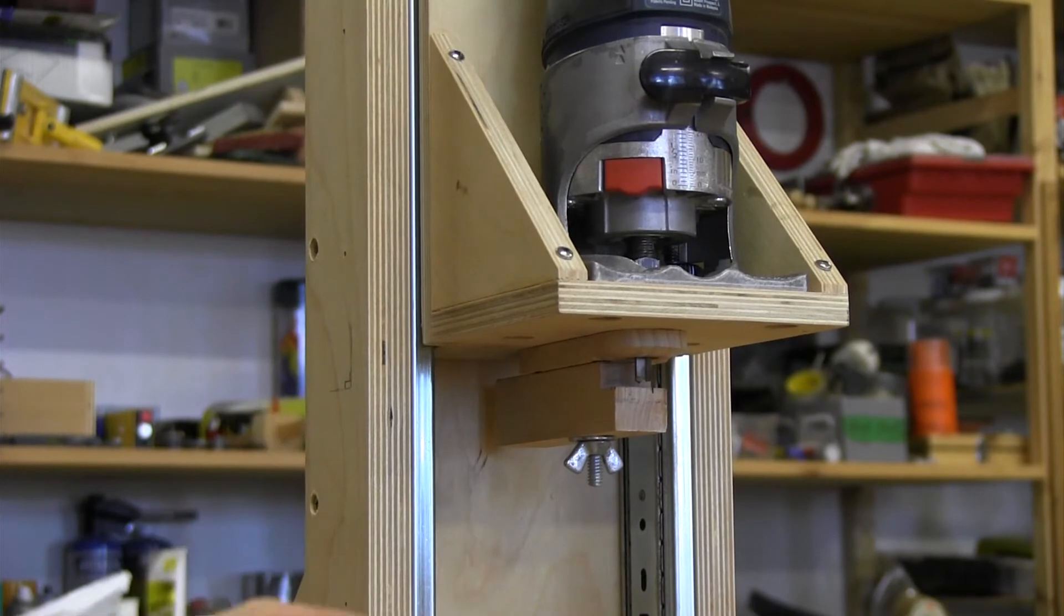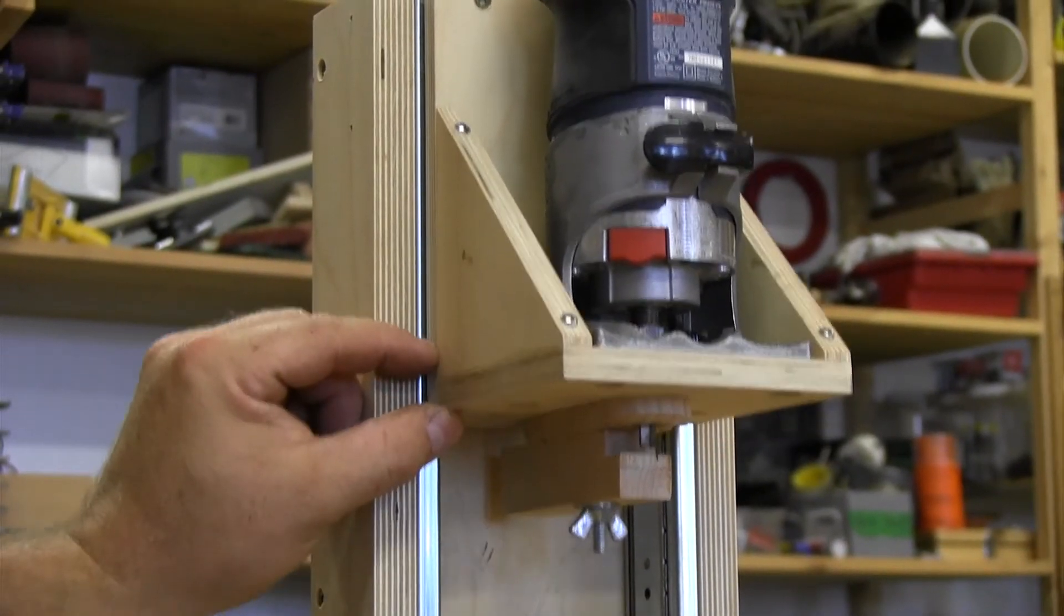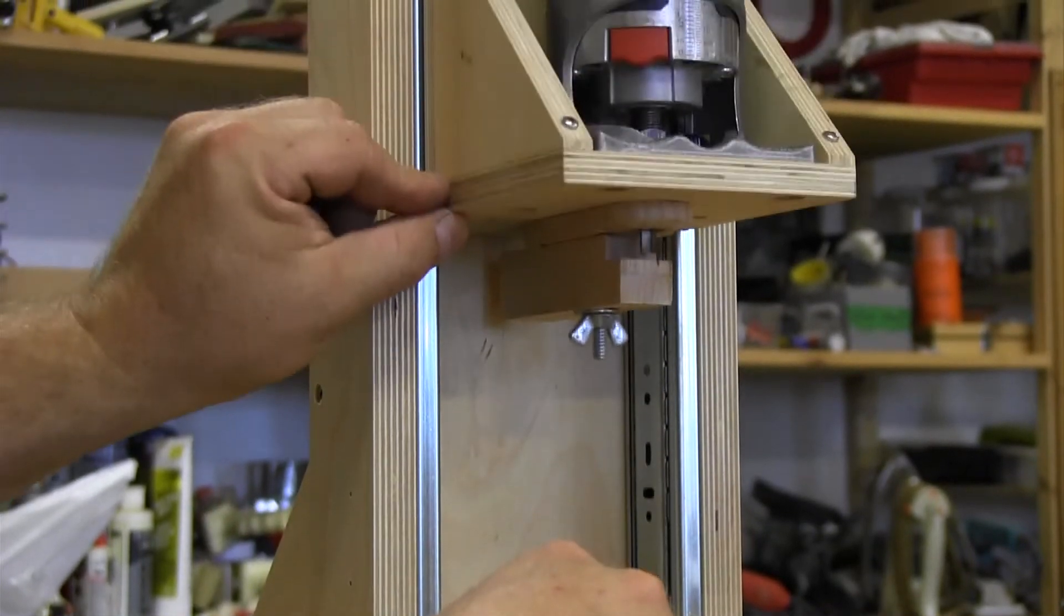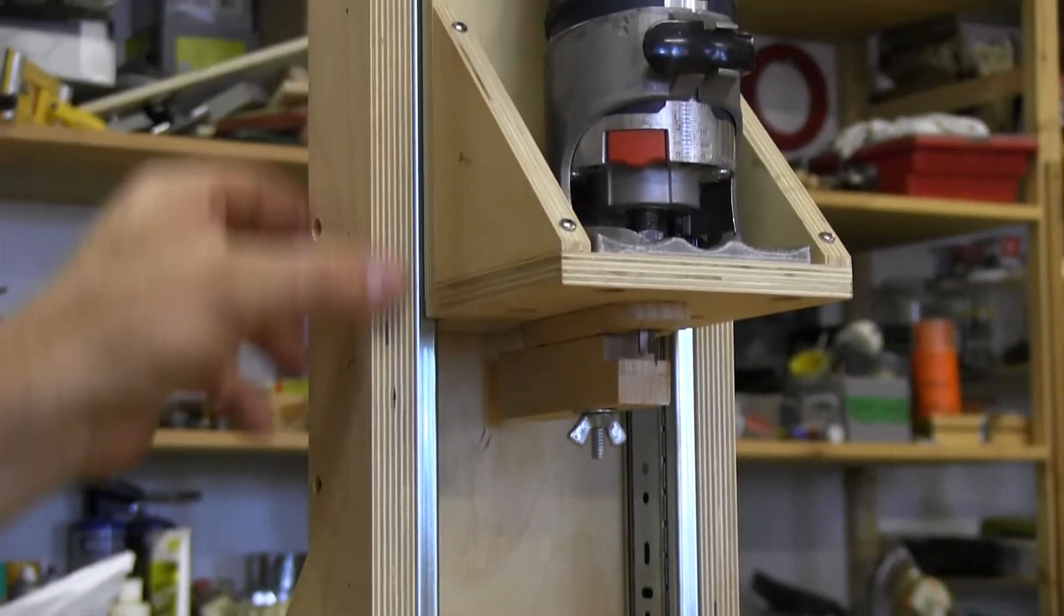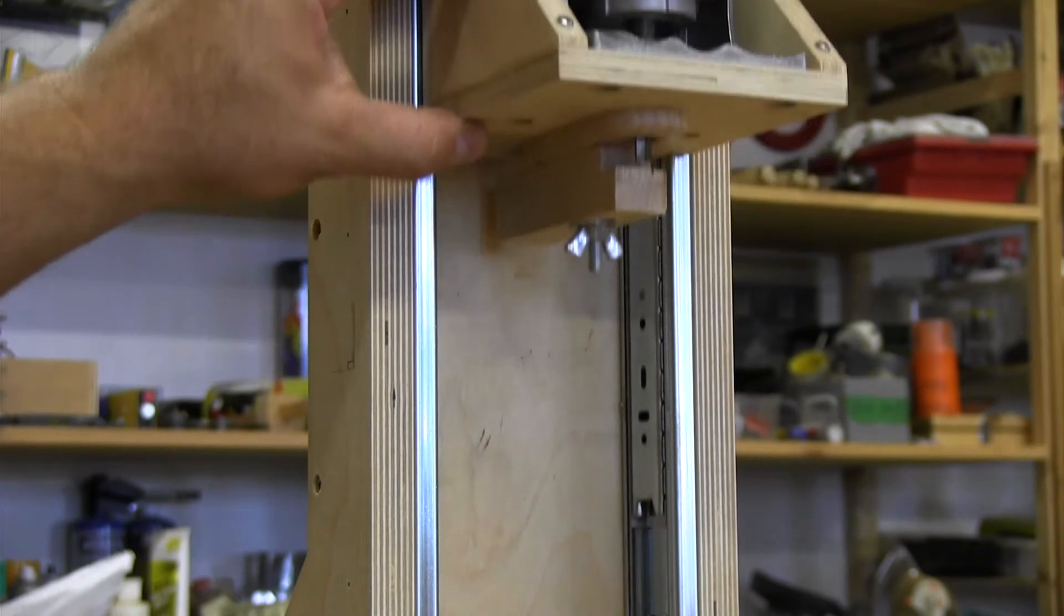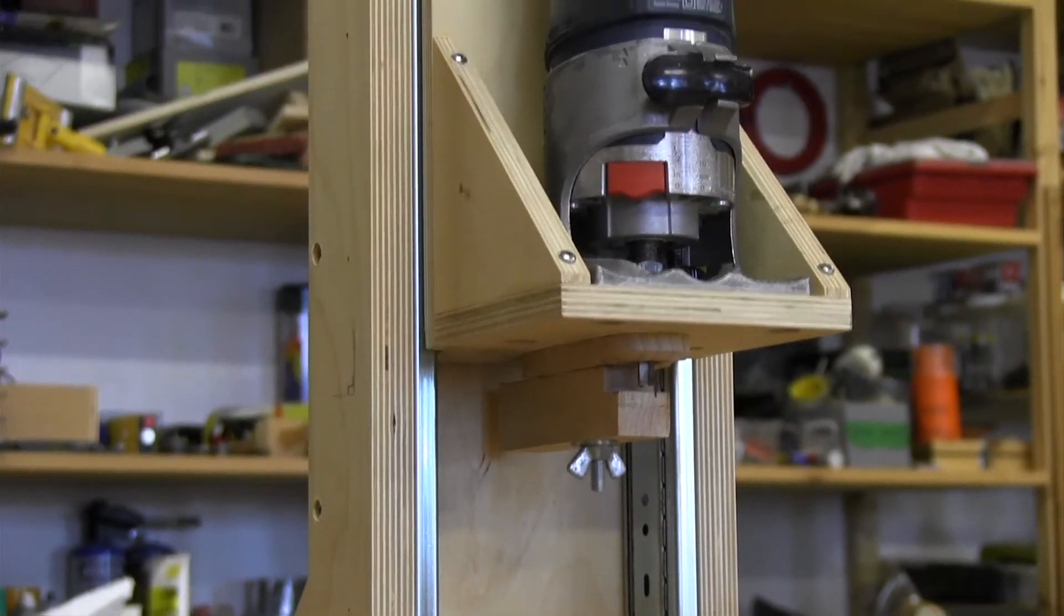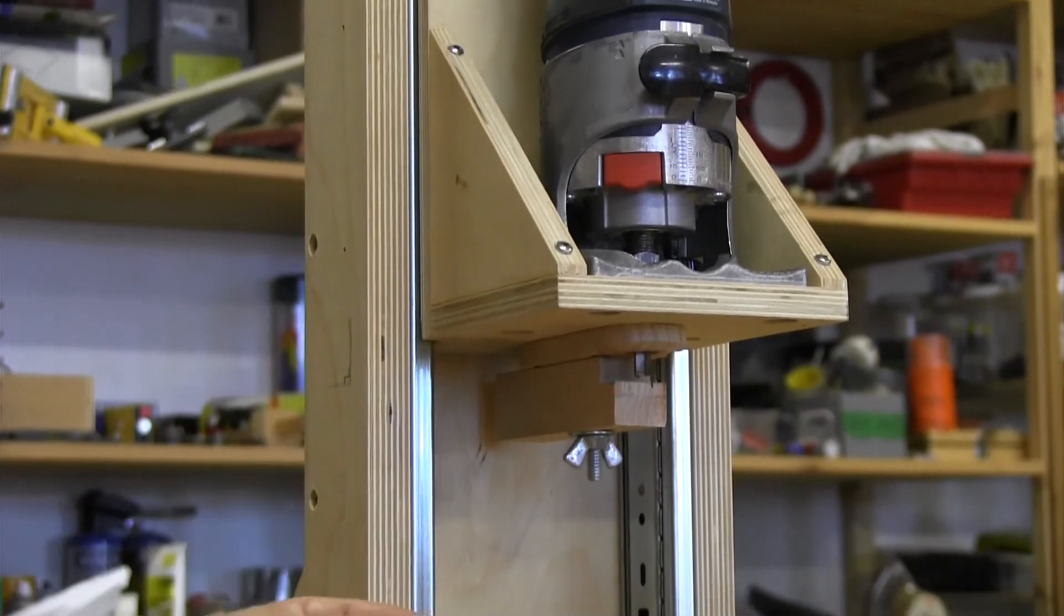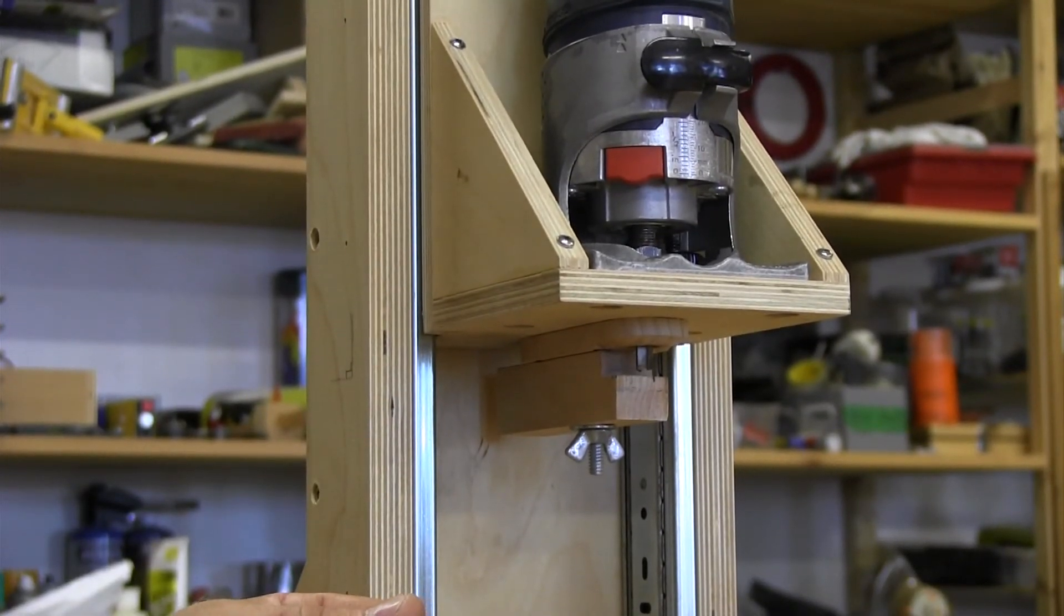It's a simple little jig. It runs on some full extension drawer glides on the inside here, which I've attached into a plywood channel. The router just sits on a little wooden base. It's very simple and very effective and does a good job at milling a square channel in the edge of an instrument.